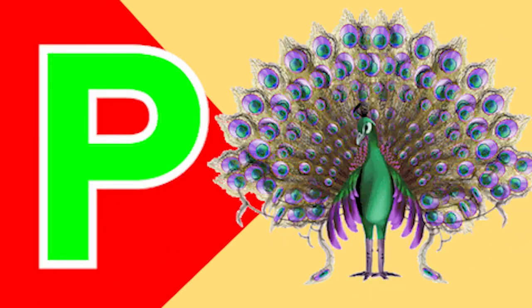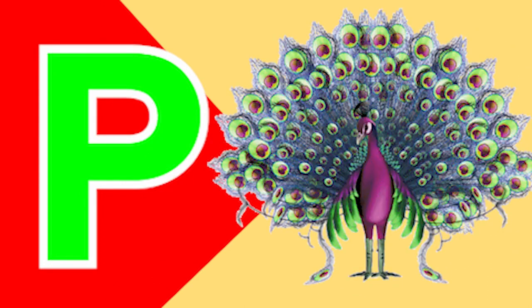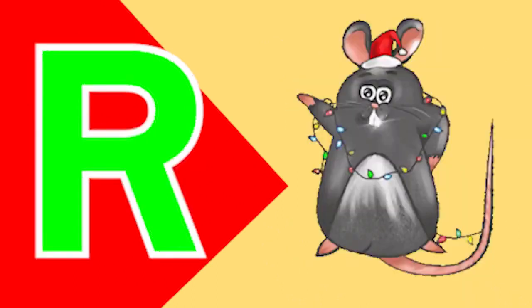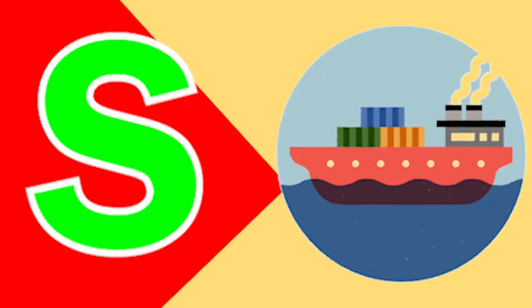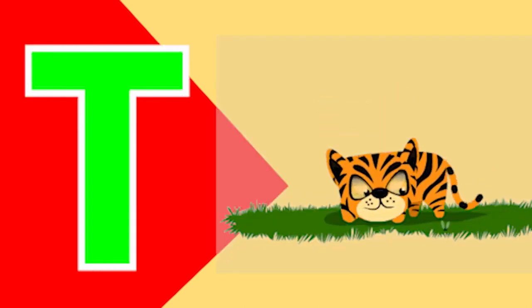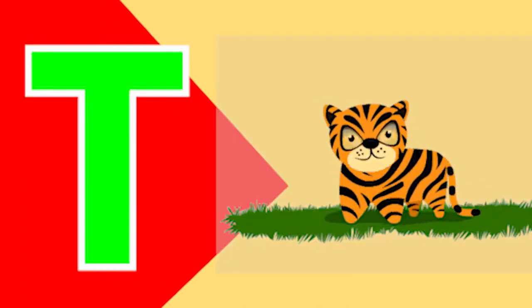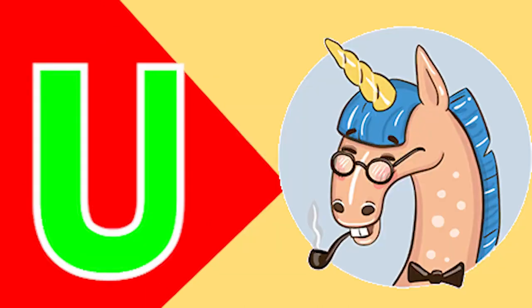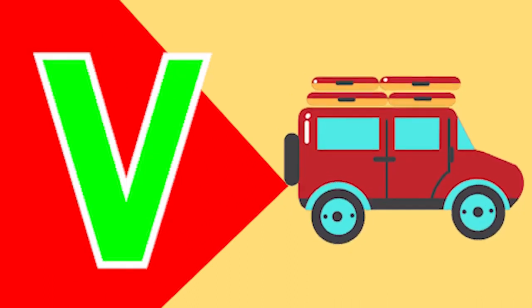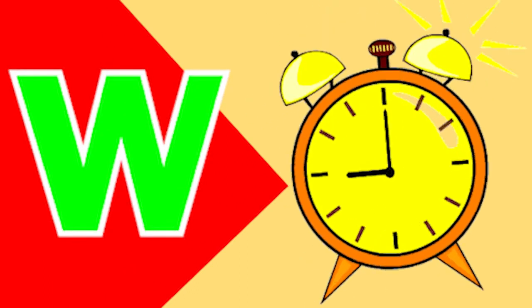P for peacock, Q for queen, R for rat, S for sheep, T for tiger, U for uniform, V for van, W for boat.